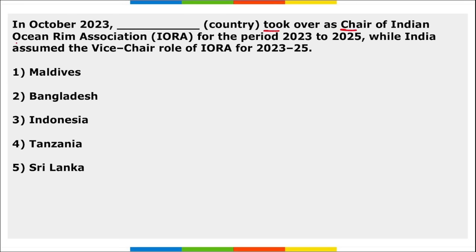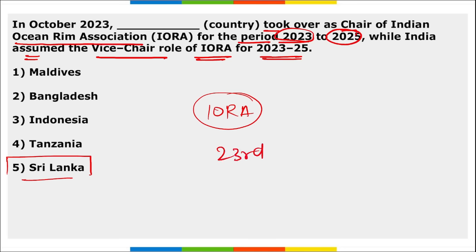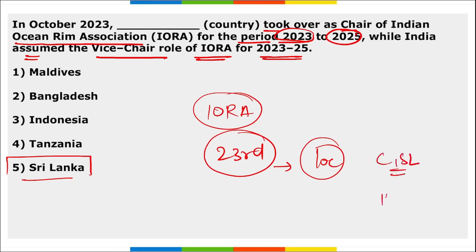Sri Lanka took over as the chair of the Indian Ocean Rim Association (IORA) for 2023 to 2025, while India assumed the vice chair role for the same period. Sri Lanka was chosen as chair during the 23rd Council of Ministers meeting of IORA held in Colombo, Sri Lanka on 11th October. From 2025 to 2027, India will have the chair role for IORA.